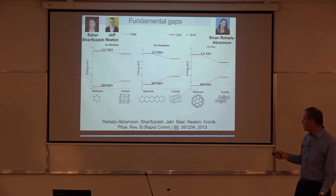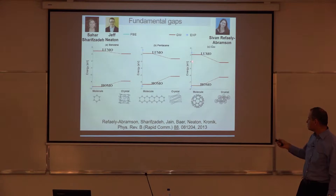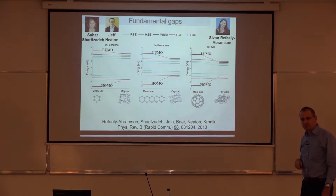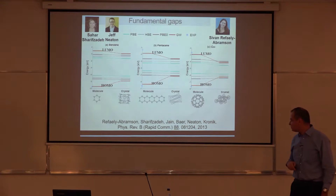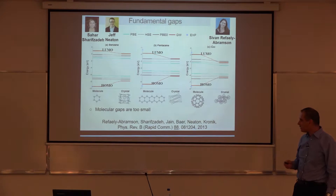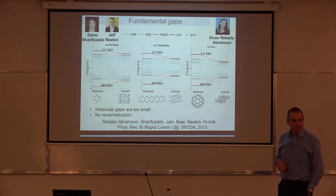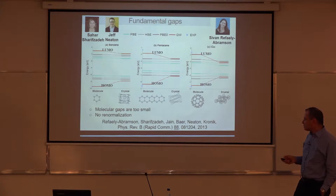One problem with density functional theory — something we looked at together with a group of my colleague Jeff Neaton in Berkeley — is that if you do many-body perturbation theory, which explicitly checks what happens when you remove an electron, you really see this gap renormalization effect. For benzene, pentacene, and C60, both as molecule and solid, you see a great big renormalization. But if you do DFT with PBE, HSE, PBE0, or your favorite functional, the answer is nothing — normal DFT is completely blind to this. You have two problems: first, the molecular gap is too small, and second, there is no renormalization as you go from molecule to solid.